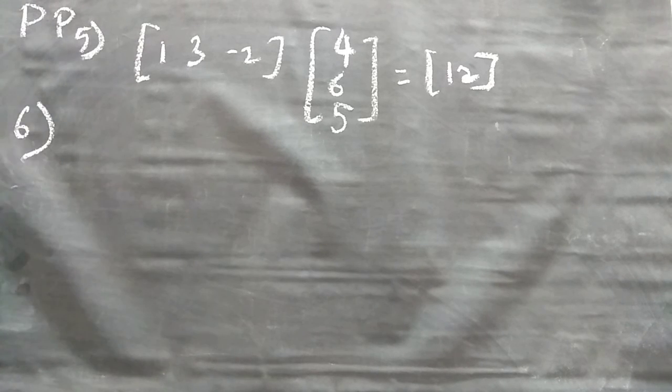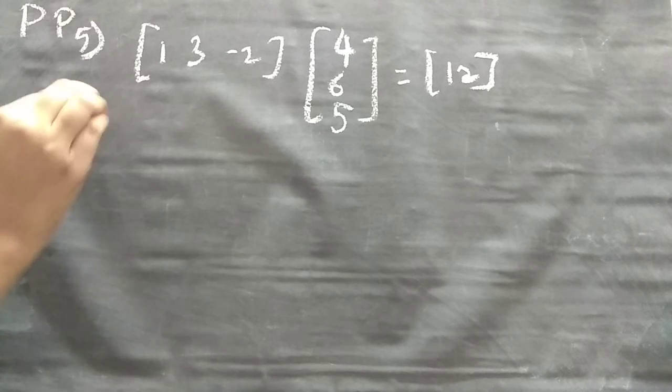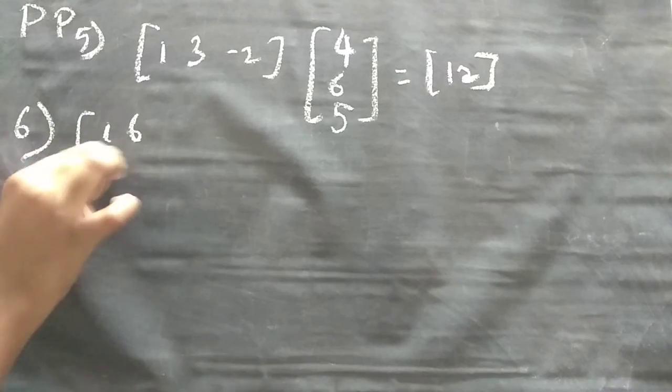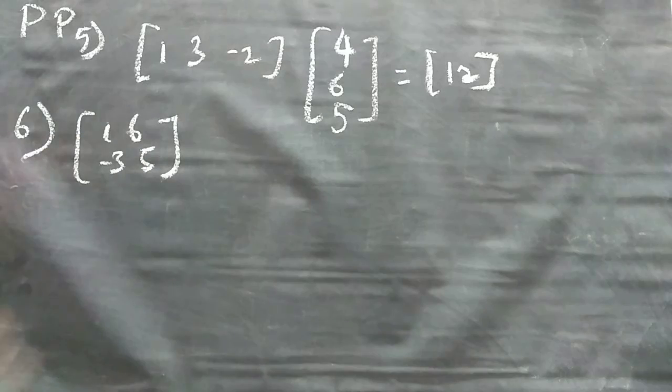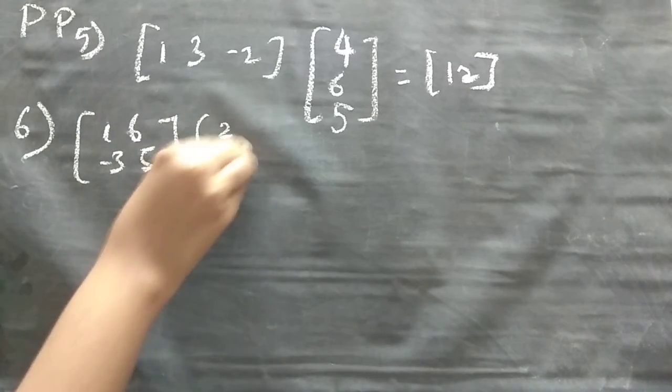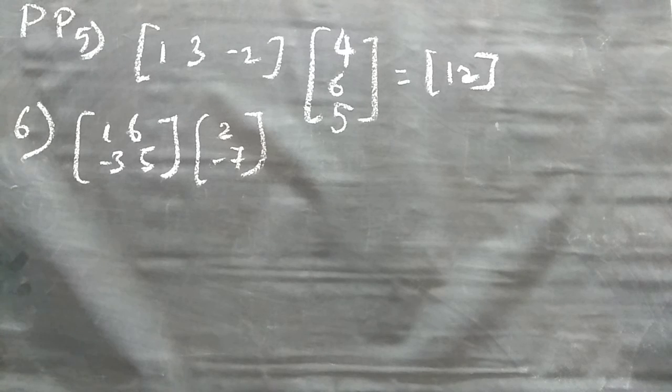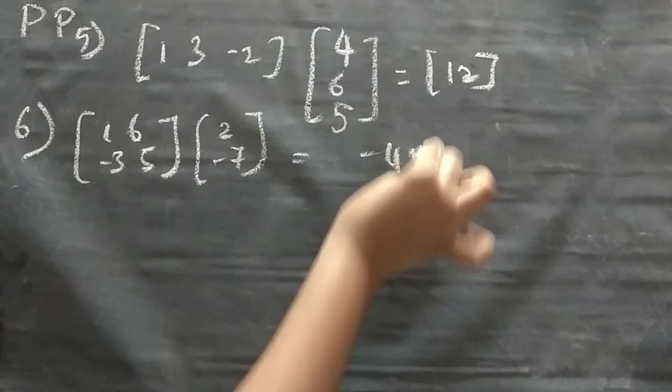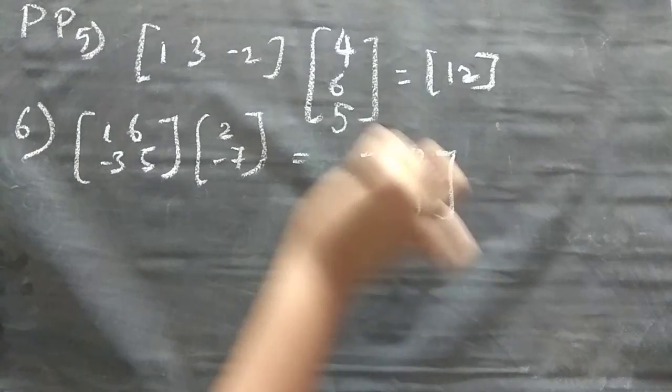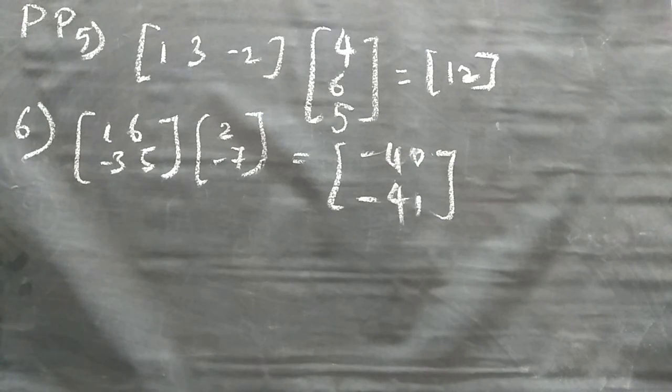Now 6th question we will see. So here also they gave us [1, 6, -3, 5] into [2, 2, -7]. So that one answer. How you can solve, solving process everyone know. Because I explained. 2 minus 42, -6 minus 35. That is equal to 2 minus 42, -6 minus 35. And answer is -40, -41. Simple right. Option B.